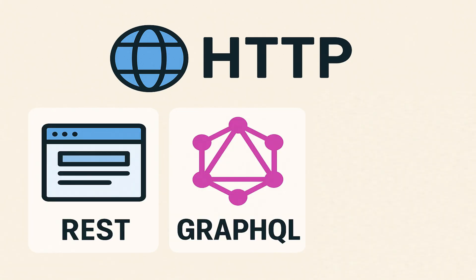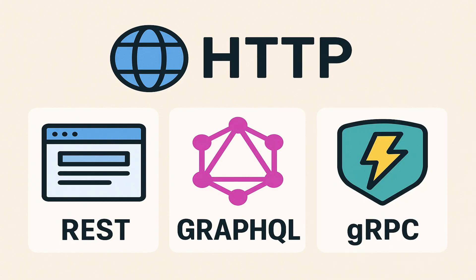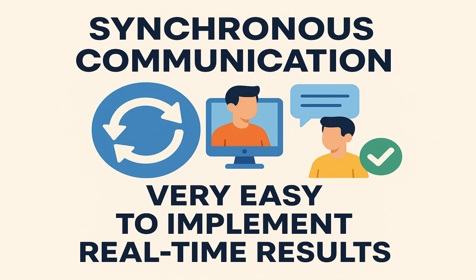We also have GraphQL, which gives the client flexibility to fetch exactly the data they need. And we also have gRPC, which is super fast and uses protocol buffers — great for inter-service communication. Synchronous communication is easy to implement and gives you real-time results, which is awesome when everything is working fine.